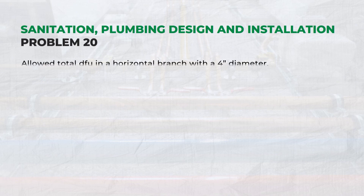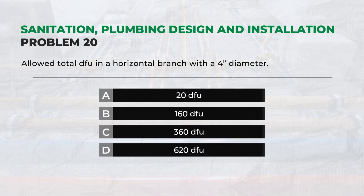What is the allowable total DFU in a horizontal branch with a 4-inch diameter? — Answer: B. 160 DFU.